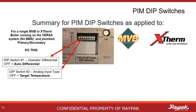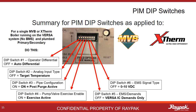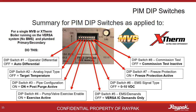Here is the summary for PIM dip switches on the MVB and Xtherm boilers. For a single boiler operating on the Versa system — not on a building management system — and plumbed primary or secondary, turn on dip switches three, four, and seven, and leave the others off. This will enable the post purge feature, allow for pump exercise, and enable freeze protection. Turn on three, four, and seven.